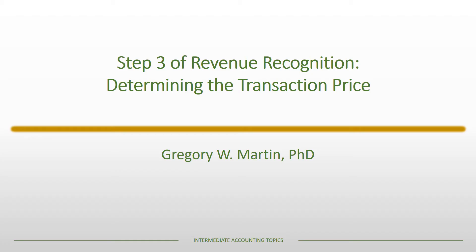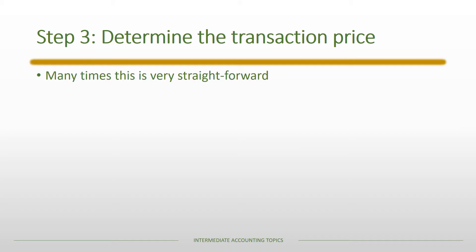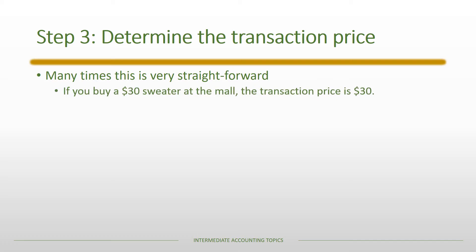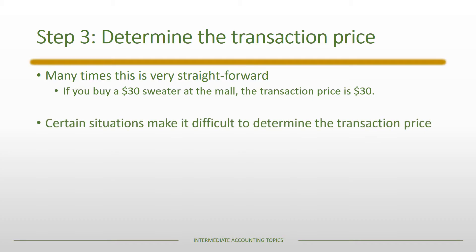We're going to go over the third step in revenue recognition: determining the transaction price. Many times this is pretty straightforward — for example, a $30 sweater has a transaction price of $30. However, there are situations where it's more complicated. First, whenever there's variable consideration — something dependent on a bonus based on certain things, or discounts — where it's not exactly known how much will be paid in the end.